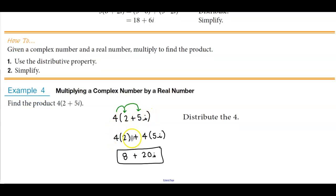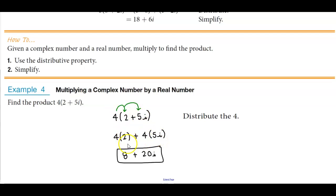We're going to have 4 times 2 plus 4 times 5i. Well 4 times 2 gives you 8 and 4 times 5i gives you plus 20i. So 8 is the real part, 20i is the imaginary part.